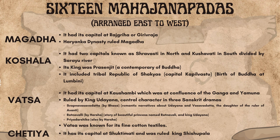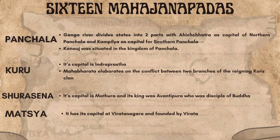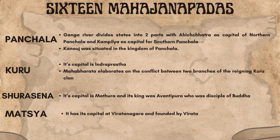The Chedi Kingdom had its capital at Shuktimati and was ruled by King Shishupala. The Panchala Kingdom had two capitals — Ahichatra as capital of Northern Panchala and Kampilya as capital of Southern Panchala — as the Ganga River divides the state into two parts.